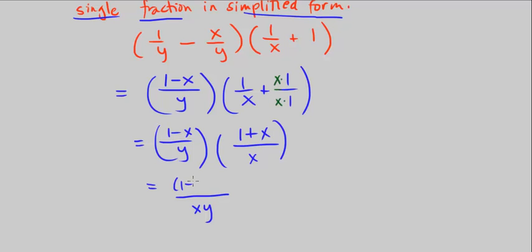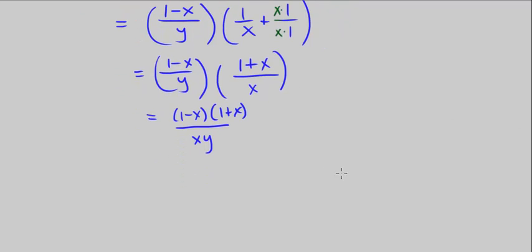In the numerator, we have (1-x) times (1+x). We can use our box method or FOIL, or just looking at this, knowing that if we were to factor the difference of squares, this is what it would look like. To distribute this, I'm going to use the box method: 1+x, 1-x.